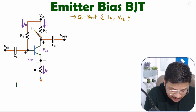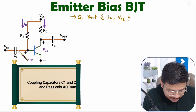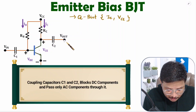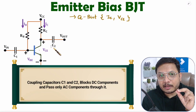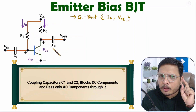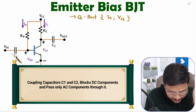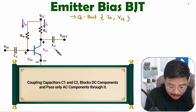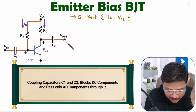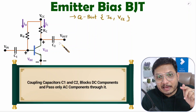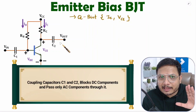With this circuit we give input at the base of the transistor. Before we give input to the base we connect coupling capacitor C1, and we take output from the collector through coupling capacitor C2. The coupling capacitor blocks the DC component and passes only AC components. So C1 and C2 block DC and allow only AC to pass through.